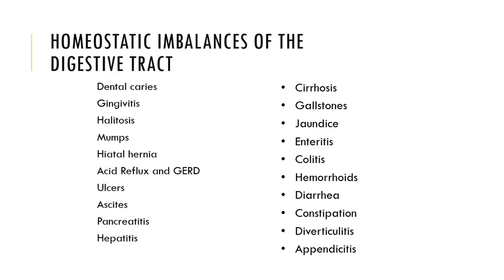Then we have a hiatal hernia. This is a hernia of a portion of the stomach — sometimes a loop of the small intestine — getting caught in the esophageal hiatus, hence the name hiatal hernia.